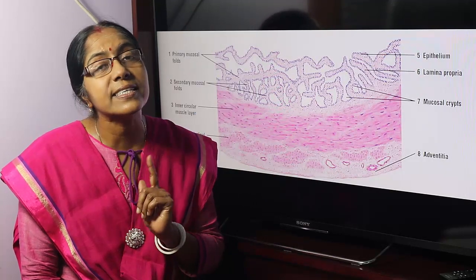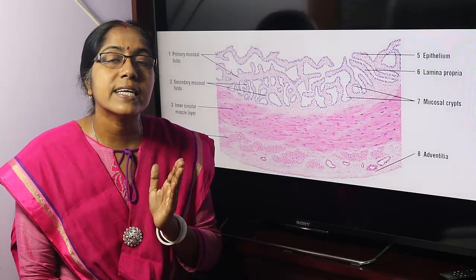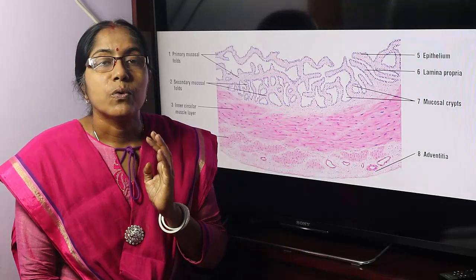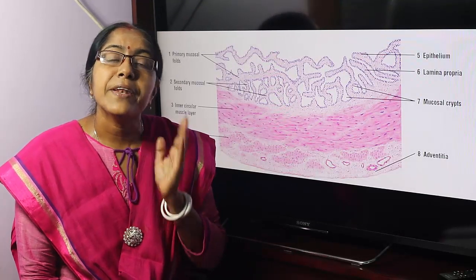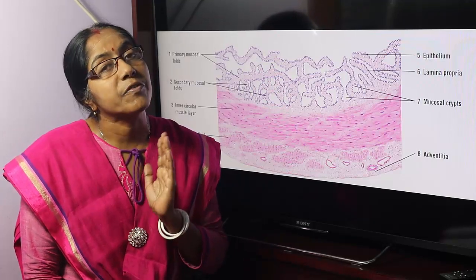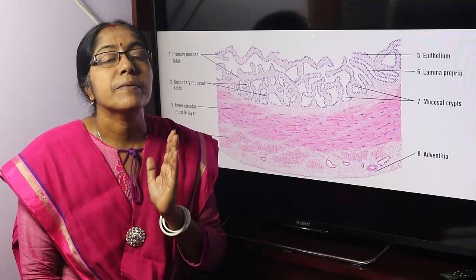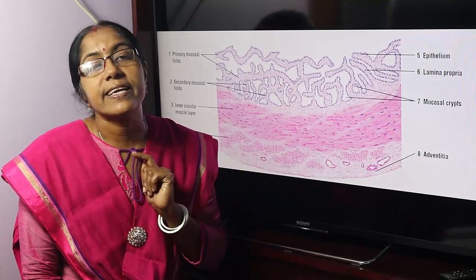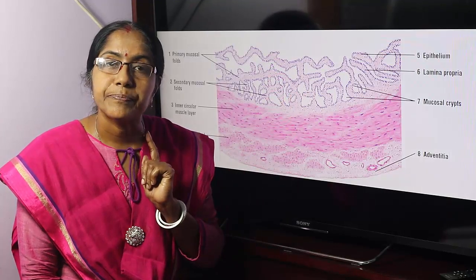What is the secretion of the seminal vesicle? The secretion is composed of fructose, choline, prostaglandin, and a coagulating enzyme termed vesiculase. This is the secretion of the seminal vesicle.